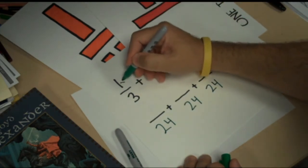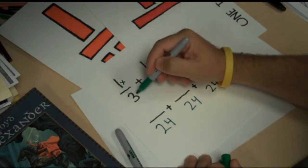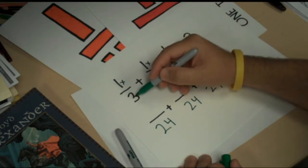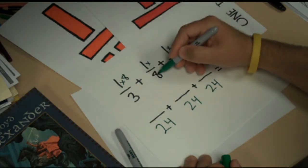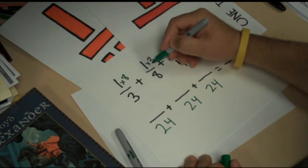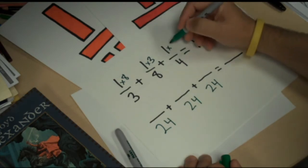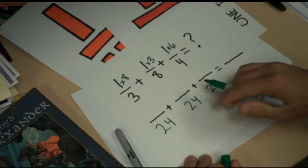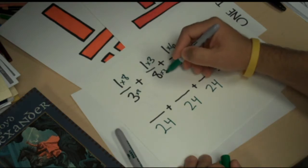I need to multiply my numerator and find out what my new numerator is going to be. So, in order to get 24 from 3, I had to multiply by 8. So, I'm going to multiply that by 8. In order to get 24 here, I had to multiply by 3, 8 times 3. And in order to get 24 here, I needed to multiply by 6. 4 times 6 is 24. So, now, that's how I got 24 on those.